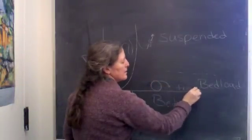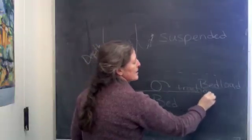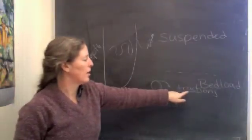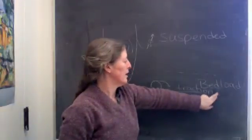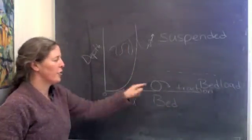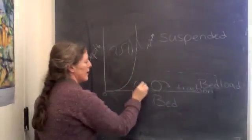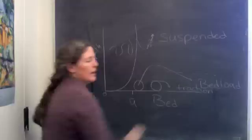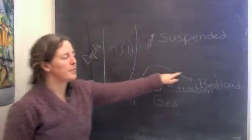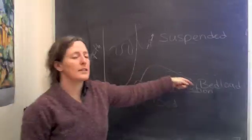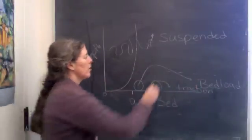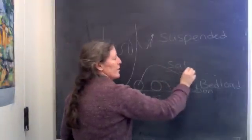And grains that stay in contact with the bed are generally considered in traction, and they're the ones that roll. A grain that gets lifted off the bed into the flow and moves downstream, but the settling velocity's fast enough that the turbulence can't keep it in the flow are said to be saltating grains.